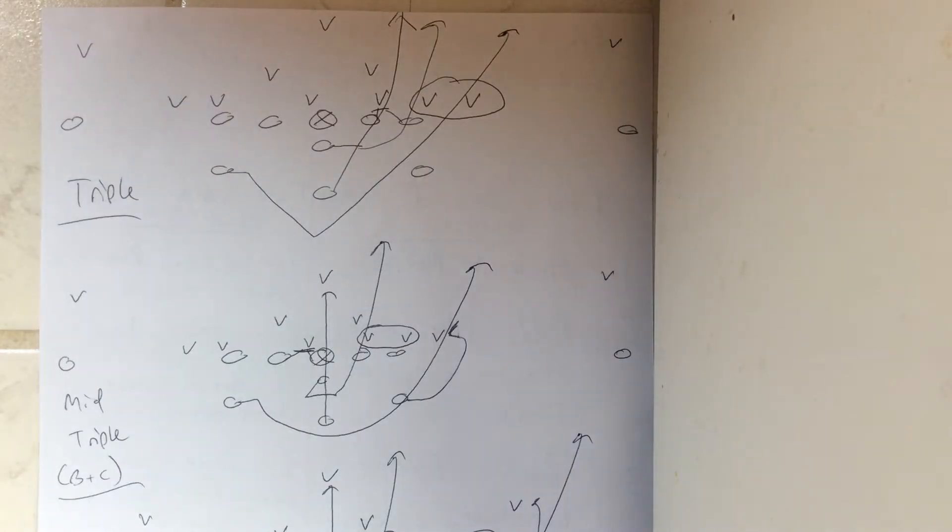Dr. Sella here, and there's really three types of triple options you can run. How the triple option works is you're going to read the C-gap player and the D-gap player. That's what makes it a triple option.